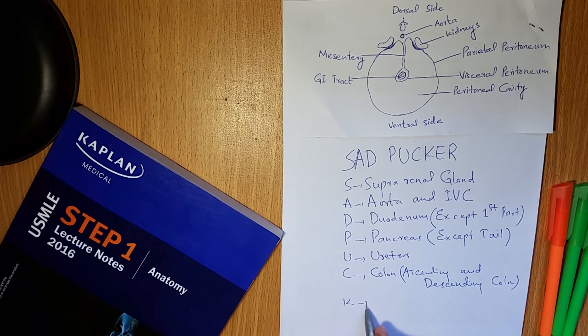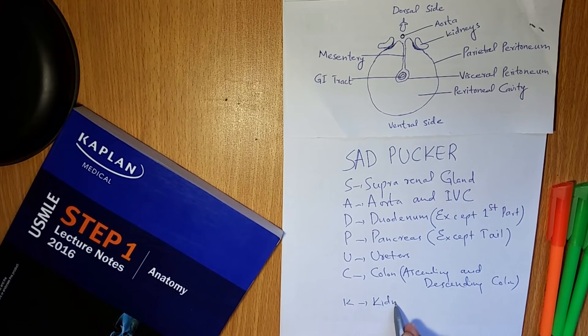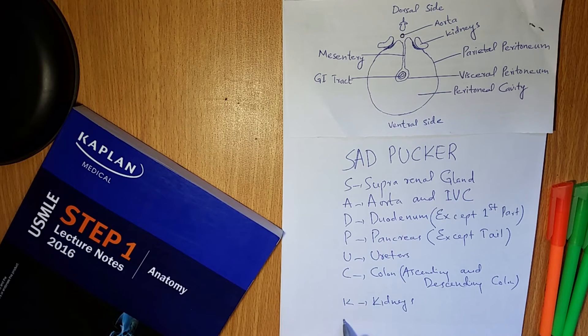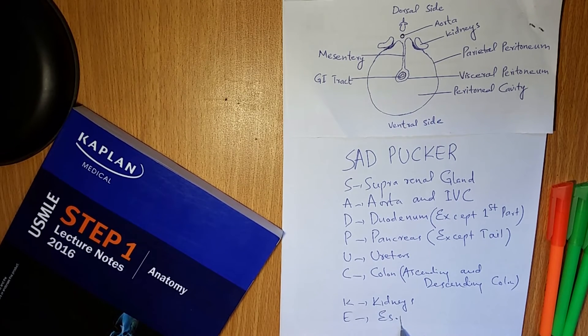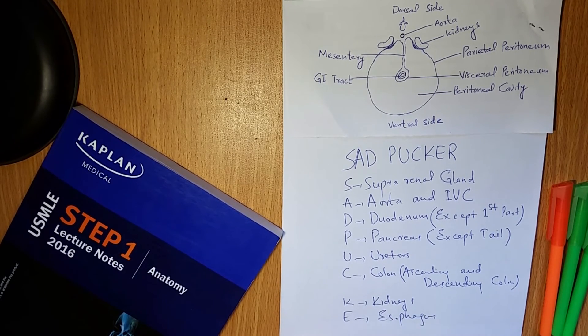K is for kidneys. E is for esophagus. R is for rectum.